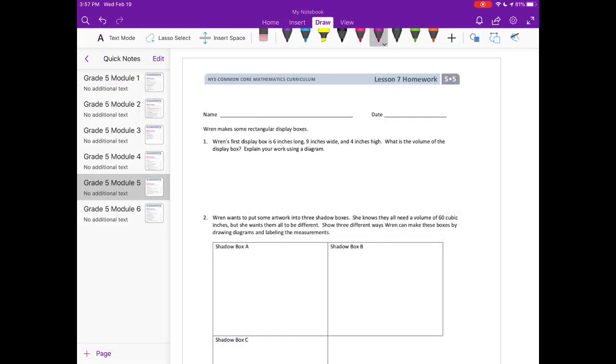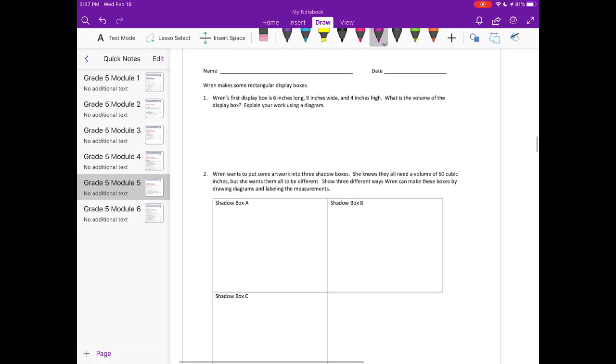Module 5, Lesson 7 Homework. Wren makes some rectangular display boxes. Number 1: Wren's first display box is 6 inches long, 9 inches wide, and 4 inches high. What is the volume of the display box? Explain your work using a diagram.